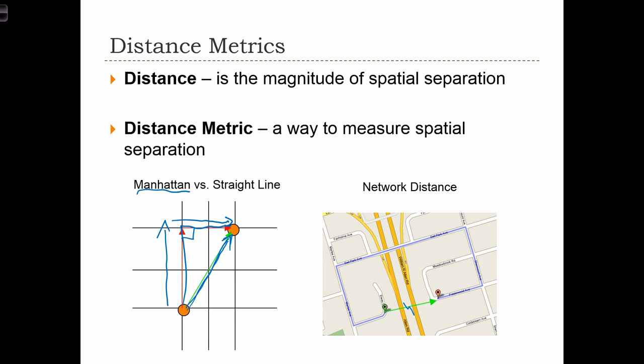That works in cities that have a regular street network. And sometimes this is a very good approximation of distance. But a lot of the times, we actually want to use actual network distance, or the shortest path along a network between two locations.